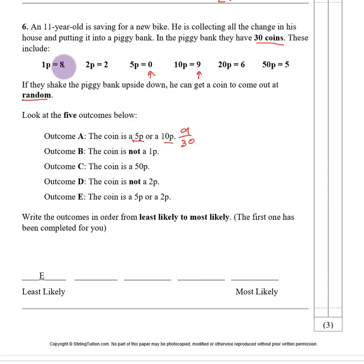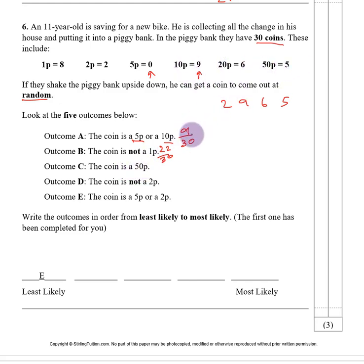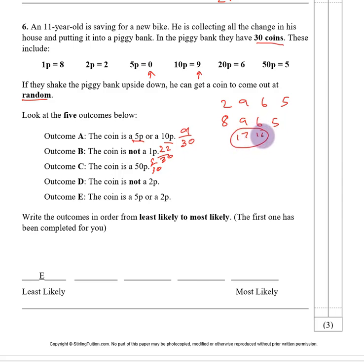The coin is not a 1p, so it could be a 2p, 10p, 20p, or 50p: 2+9+6+5 gives 22 out of 30. The coin is a 50p: 5 out of 30. The coin is not a 2p, so it could be a 1p, 10p, 20p, or 50p: 8+9+6+5 — 8+9 is 17, 6+5 is 11, combined is 28 out of 30. The coin is a 5p or 2p: 5p we have none, 2p we have 2, so that is 2 out of 30.